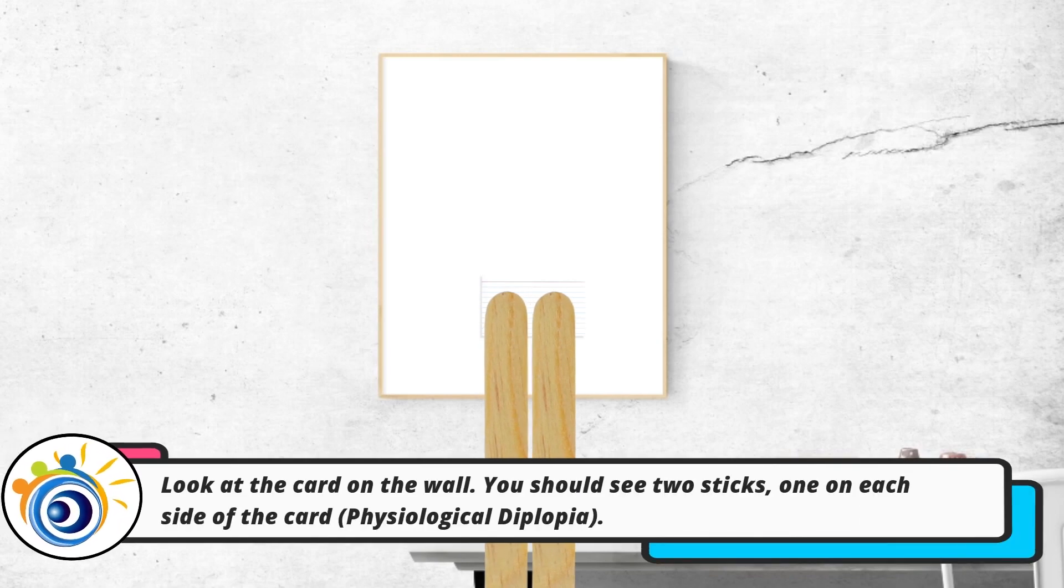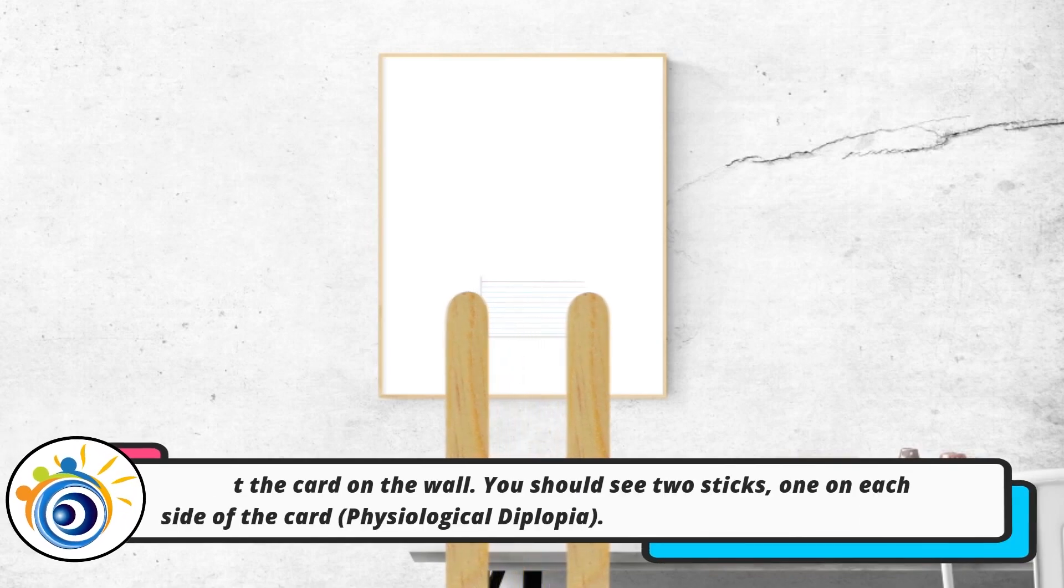Look at the card on the wall. You should see two sticks, one on each side of the card. This is called physiological diplopia.